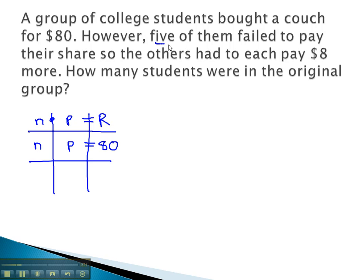We're also told that 5 failed to pay. If 5 failed to pay, the number has been reduced by 5. When 5 failed to pay, each had to pay $8 more. This means the price per person has gone up, or plus $8. The revenue on the couch, the cost of the couch, was still $80.